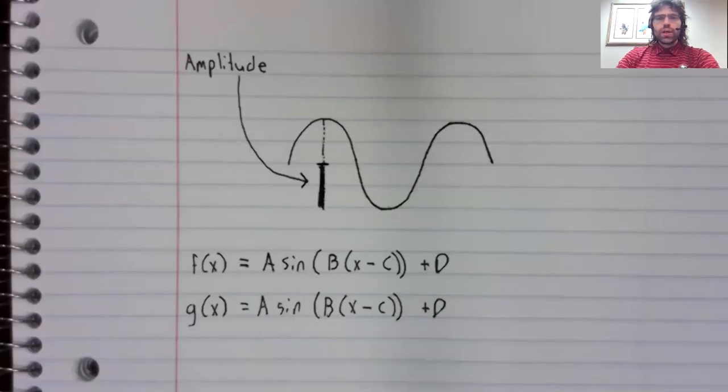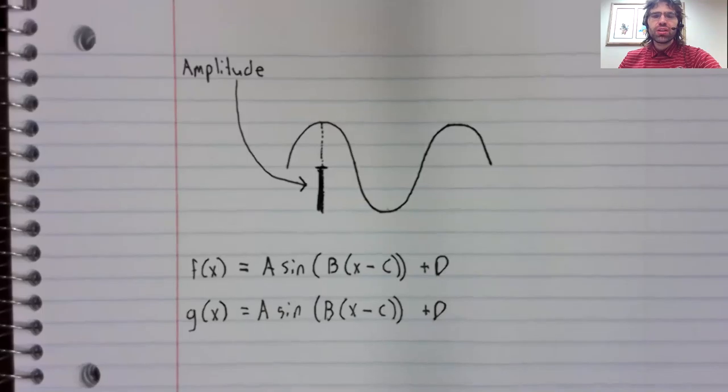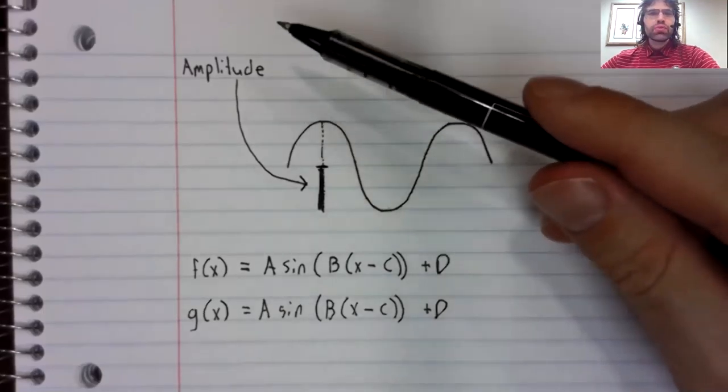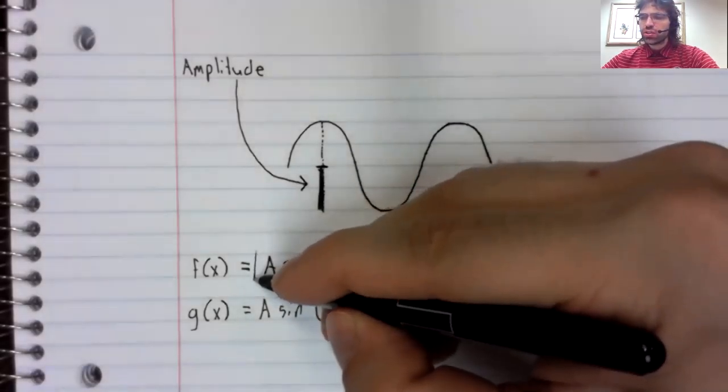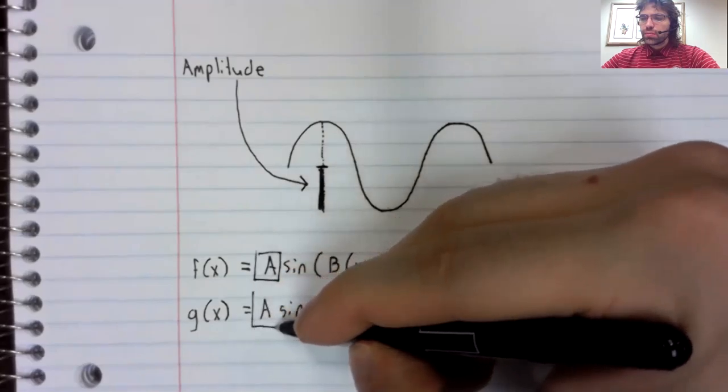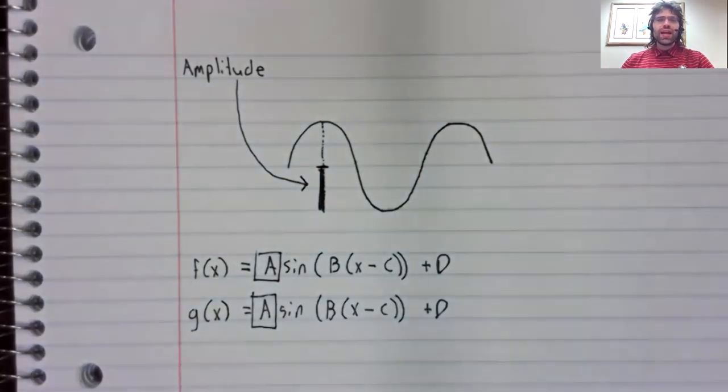The way sinusoidal functions work is that each of these constants controls a different thing. So that amplitude is just controlled by a single constant. And as it happens, it's the constant A.